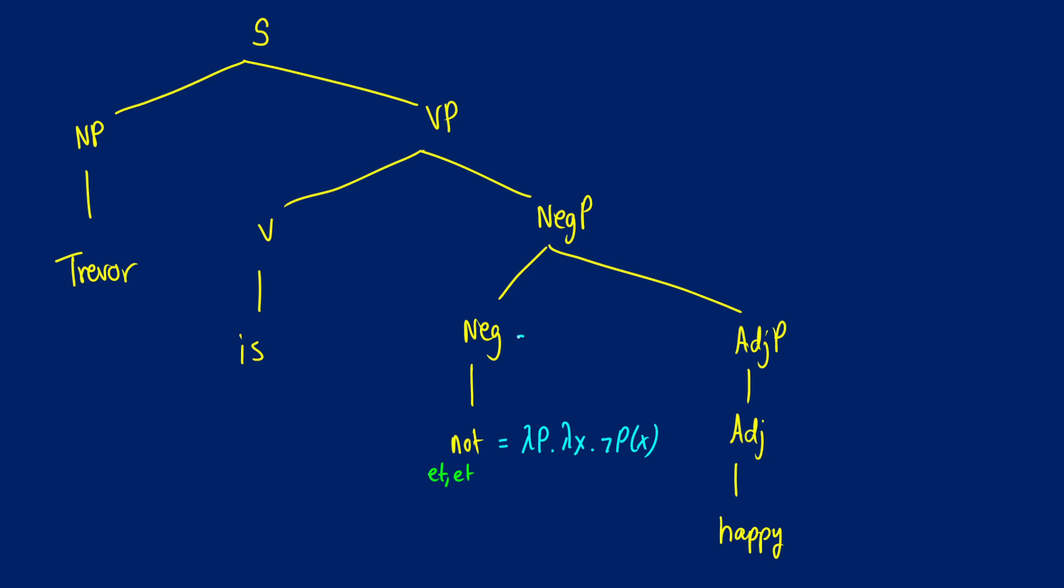So let's see how this works. I'm just going to move this up the tree. So lambda p dot lambda x dot not px. And now for happy, this is going to be lambda x dot x is happy. So we're going to move this up the tree, and then we're going to see how this is applied. Using the power of copy and paste, let's put this up. And now how is this going to look like when it's evaluated?